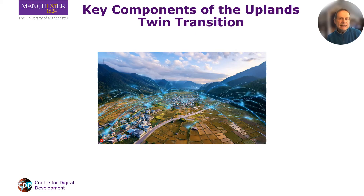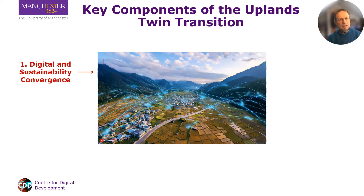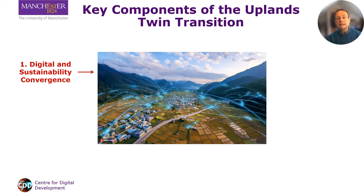We can tease out four specific aspects of uplands twin transition. First, the uplands twin transition focuses on sustainable practices supported by digital technology, such as eco-friendly agriculture, energy-efficient infrastructure, disaster risk reduction, and sustainable livelihoods. For example, use of e-commerce platforms can help upland communities sell goods without the need for physical journeys to distant markets.